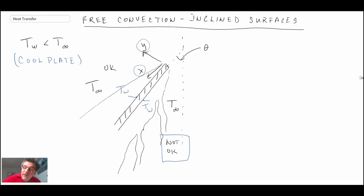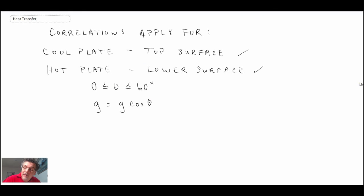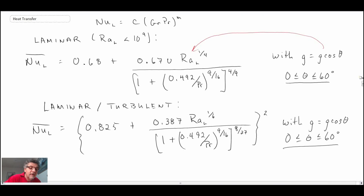These correlations will break down and they won't work there. The flow gets three-dimensional and a little bit more complex than what we can do with the equations that we have here. So that is how we handle inclined surfaces with free convection.